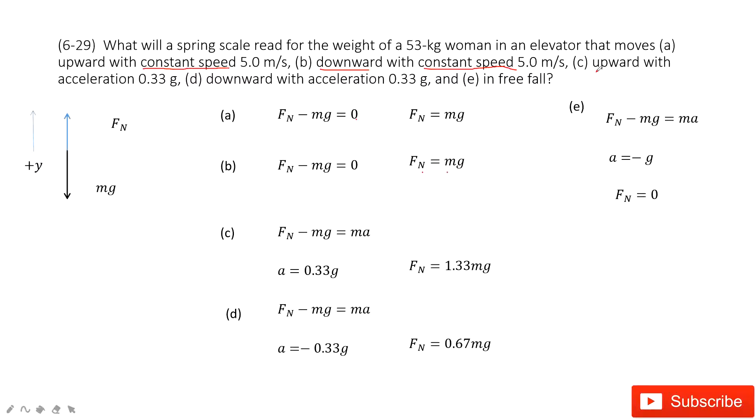Then third one, upward with acceleration 0.33g. So in this one, we get acceleration is positive 0.33g. So very easily, we can write it as the normal force minus gravity equals mass times acceleration. And then we input the acceleration inside. We can find this normal force. Very easy.